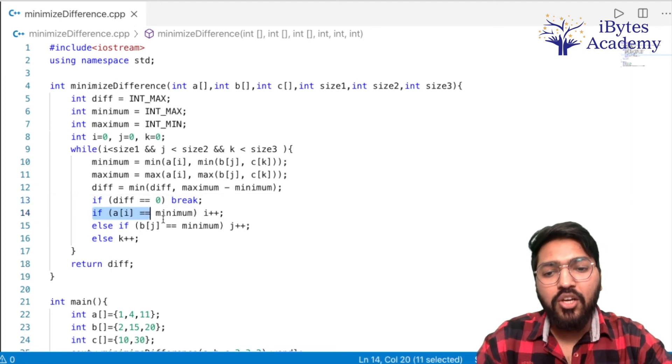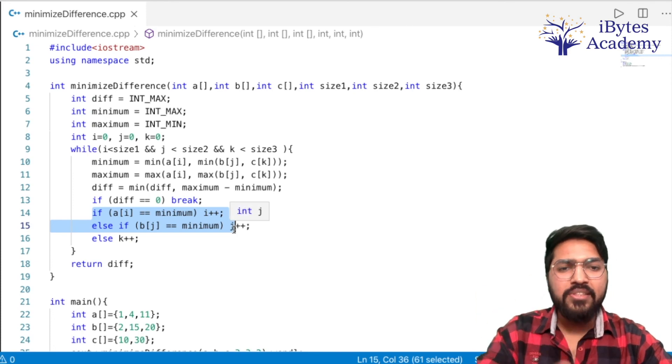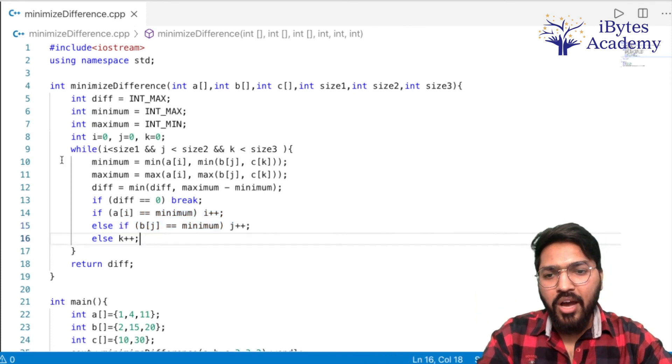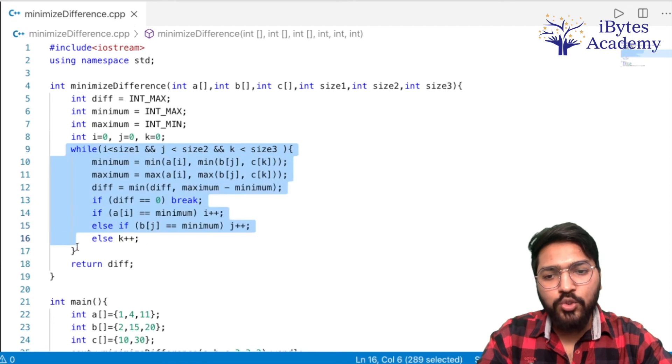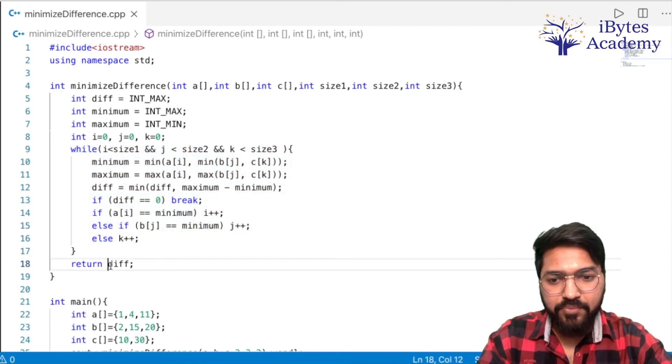Otherwise, we check which was the minimum element among the three. And accordingly we do either i++, or j++, or k++. After this loop finishes, whatever value diff has, we simply return it.